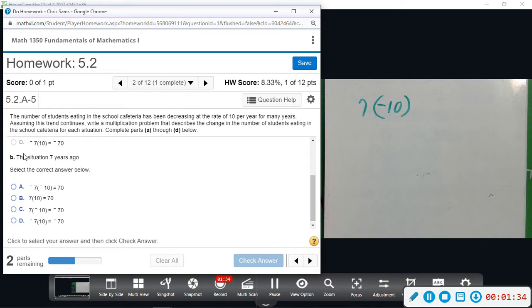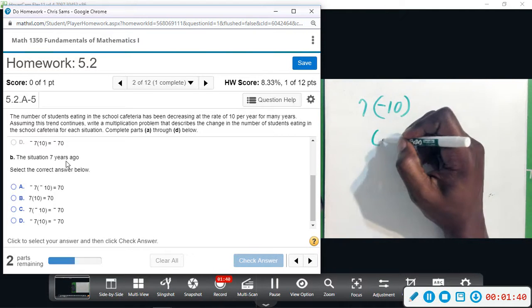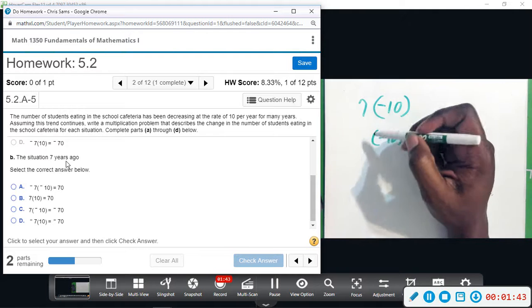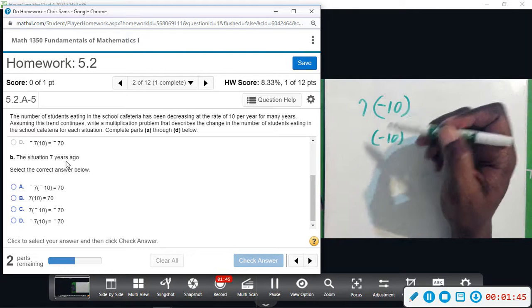Okay, B, the situation seven years ago. So we're losing ten per year. This is seven years later, seven years ago. We need to go backwards.